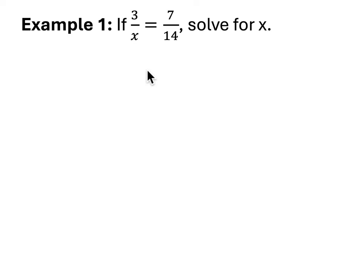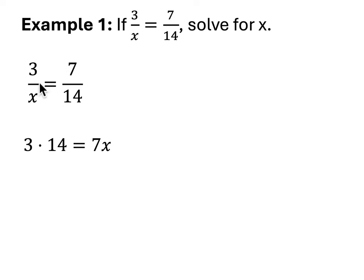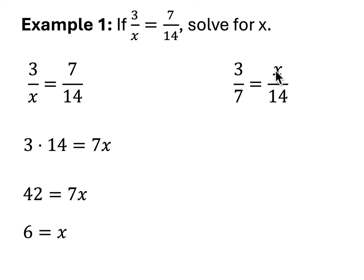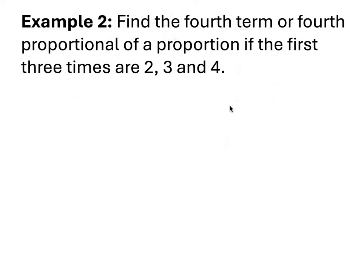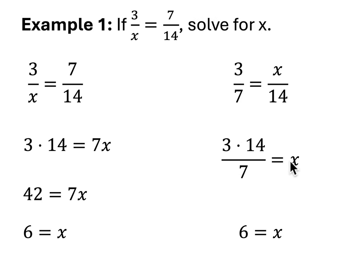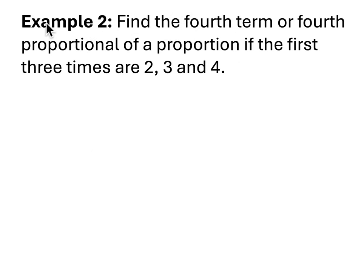For example one, we use the fact that the product of the means equals the product of the extremes. So 3 times 14, or 42, equals 7x, so x equals 6 — divide both sides by 7. You can also swap around the means for convenience: 3 over 7 equals x over 14, so multiply 3 by 14 and divide by 7, and you also get 6. Be aware you don't always have to multiply both cross products.